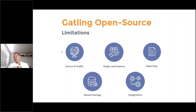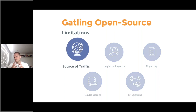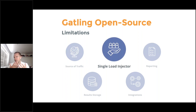However, just using the open source version has some limitations. First, the source of traffic: traffic for a real application isn't going to come from just one machine, so for an accurate realistic load test you need multiple sources. Second, there's only a single load injector — Gatling is famous for generating huge load on a single instance, but eventually you'll need multiple injectors for larger-scale tests, which is very difficult with open source but straightforward with Frontline.